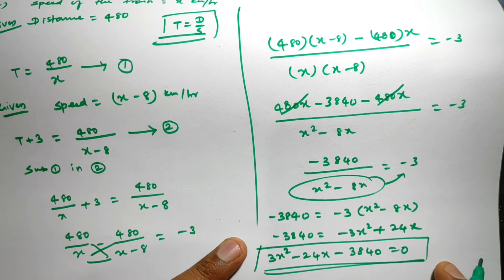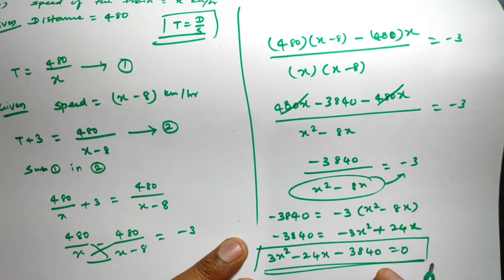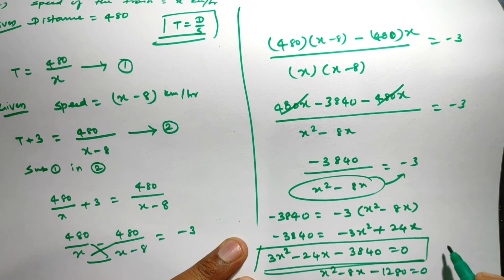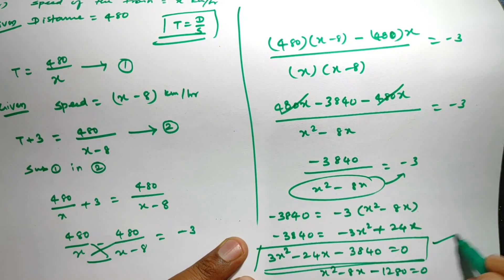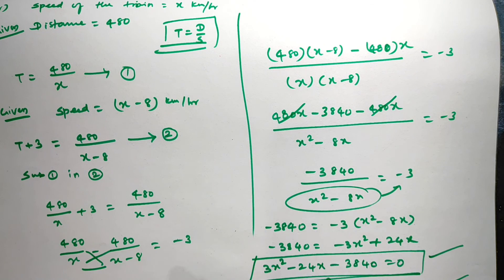Dividing through by 3, we get the simplified quadratic equation: x² − 8x − 1280 = 0. You can stop at the earlier form or simplify to this. Hope you understand all four equations. Thank you so much for watching.